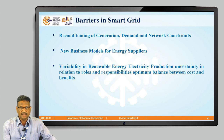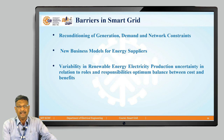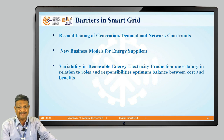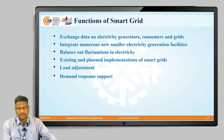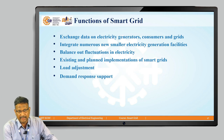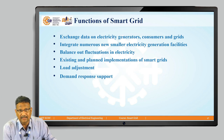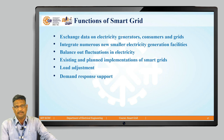What is needed includes reconditioning of generator demand and network constraints, and new business models for energy supplies. Variability in renewable energy electricity production, uncertainty in roles and responsibilities, and the optimum balance between cost and benefits are also barriers that have been discussed.